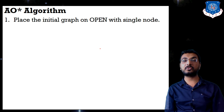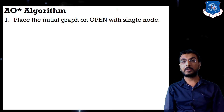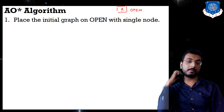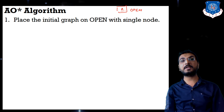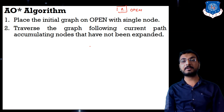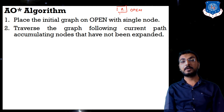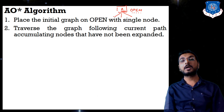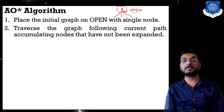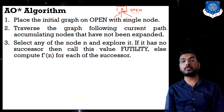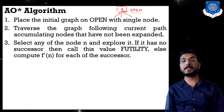Now let us discuss the AO* algorithm. Step 1: Place the initial graph on OPEN with a single node — say node A, which is our open node. Step 2: Traverse the graph following the current path, accumulating nodes that have not been expanded. For example, A has not been expanded, so we expand it to get nodes B, C, D.